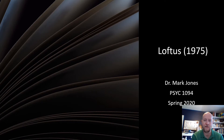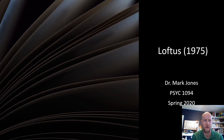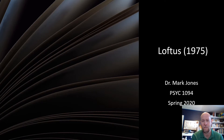Elizabeth Loftus is one of the more famous psychology researchers from the last few decades, primarily for the field of research she developed about eyewitness testimony. This is the first major article that was published, but she's built a career around this, and she's also one of the most sought-after expert witnesses in criminal cases. She's brought in as an expert to discuss her research on how eyewitness testimony is potentially malleable and not as perfect as we think.